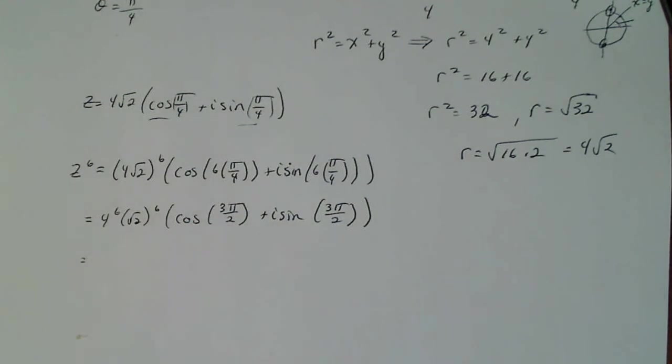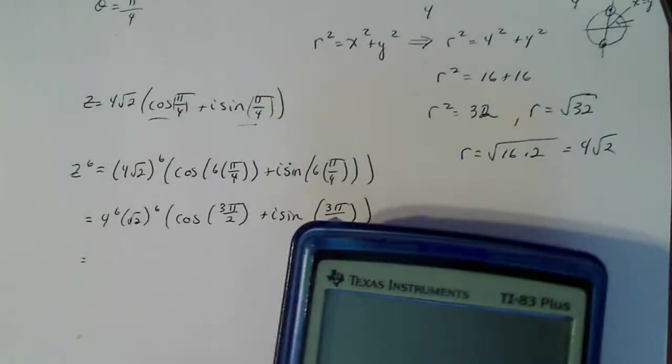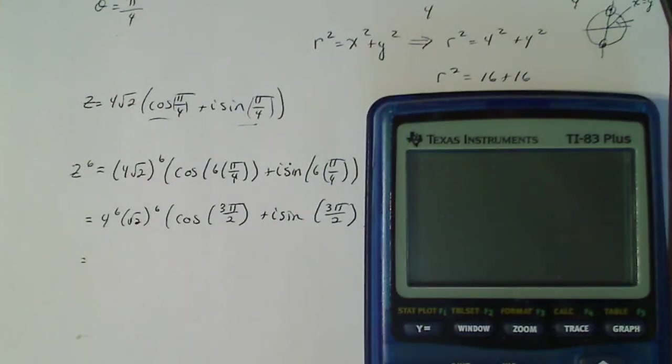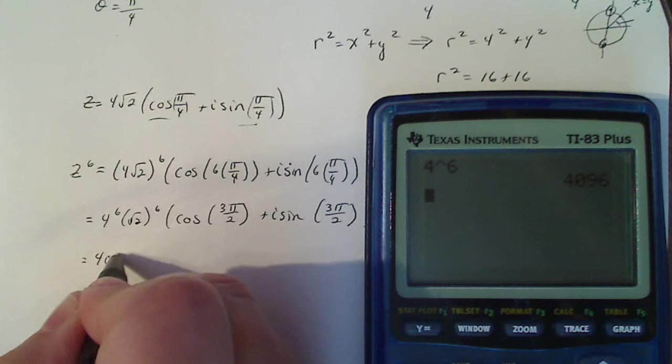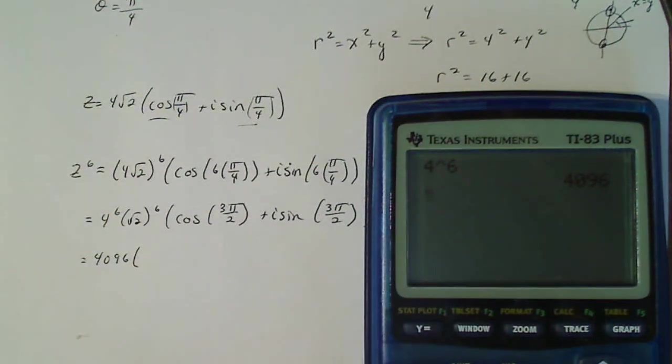I did this on my calculator. Let's see. If you type 4 to the sixth power, well, let's see if I can actually open my calculator. If you type 4 to the sixth power in your calculator, you get 4096. If you type square root of 2 to the sixth power, you get the nice round number of 8.